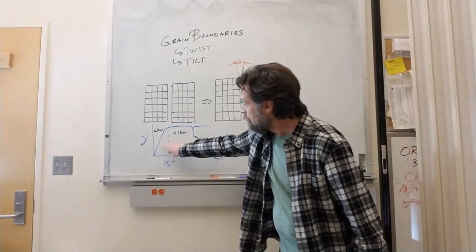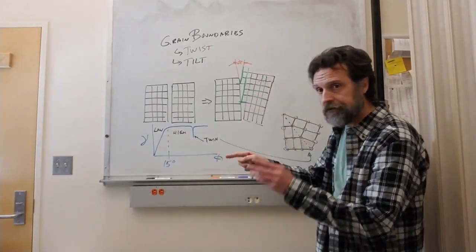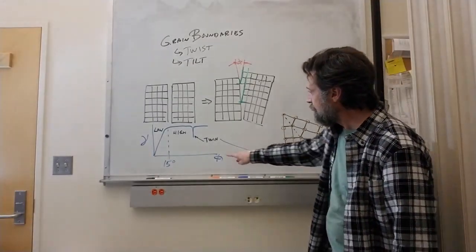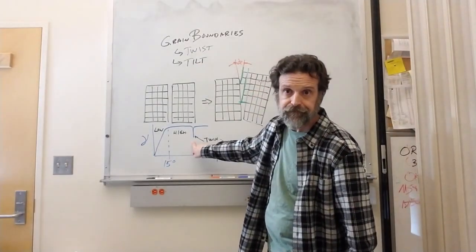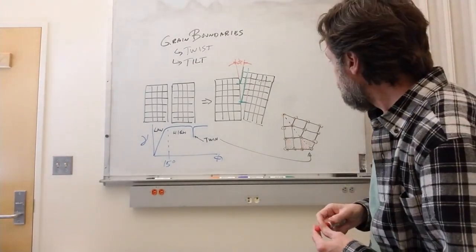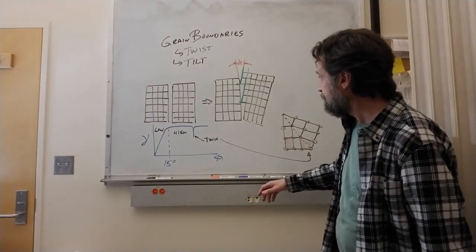As we look at this angle, at some point we get that perfect registry, they lock in, they form a twin and the energy drops. So that is what a twin boundary looks like.